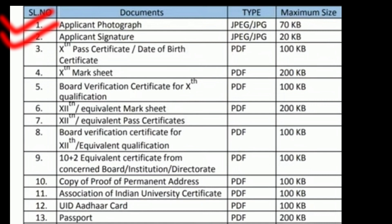The rest of the documents should be in PDF format. The third document is the Date of Birth Certificate — if you have one, that's fine; otherwise use your 10th pass certificate as the Date of Birth Certificate. The fourth document is the 10th Mark Sheet. The fifth document is the Board Verification Certificate for class 10th. If your board provides online results like CBSE and ICSE do, you can use a screenshot of that as the Board Verification Certificate. If not, then you have to write an application to your board requesting a Board Verification Certificate.